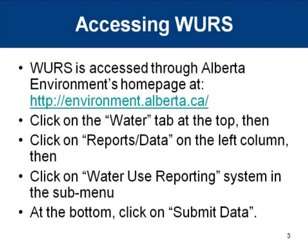To get started, you'll need to first open a web browser and navigate to Alberta Environment's home page shown on the screen. From there, users will follow a few links to arrive at the water use reporting web page. These steps are provided on this slide for your future reference, but we'll walk you through them one by one. Contact information regarding your enrollment ID and PIN number will be shown in the final screens of this video. Please note that once you start the registration process, you will need to complete the process all at once as the information cannot be saved and the system will time out after a while.